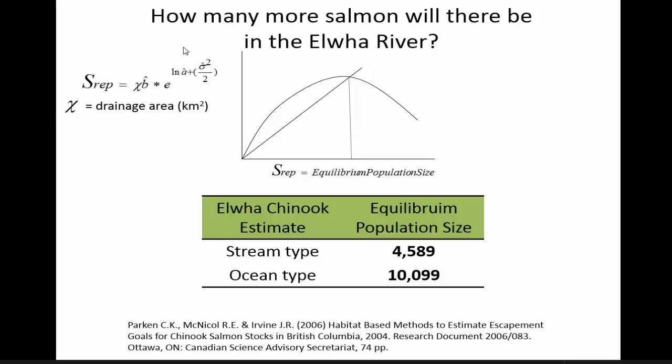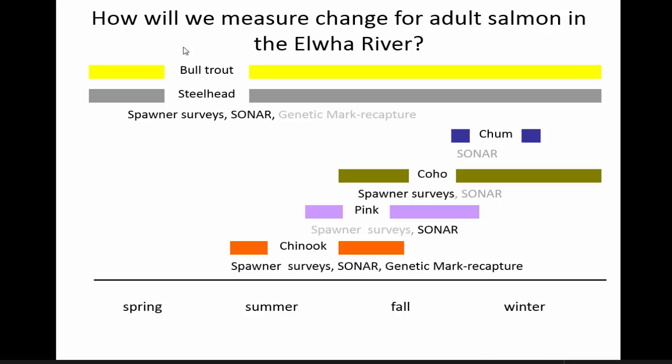We've developed simple models to estimate what we think population sizes will be as a result of dam removal. The population size for Chinook salmon right now is about a couple thousand on average, but we think it can get anywhere between roughly fifteen to twenty thousand fish. One of my jobs is to figure out how we actually measure this — it's challenging because different species come in at different times with different life history strategies, so we have to measure what occurs by different life stages. For Chinook coming in summer it's easier because water is low and clear, as opposed to steelhead coming in when water is high and turbid.